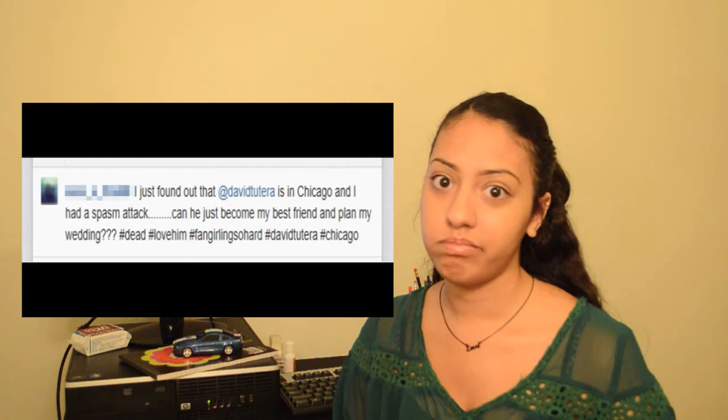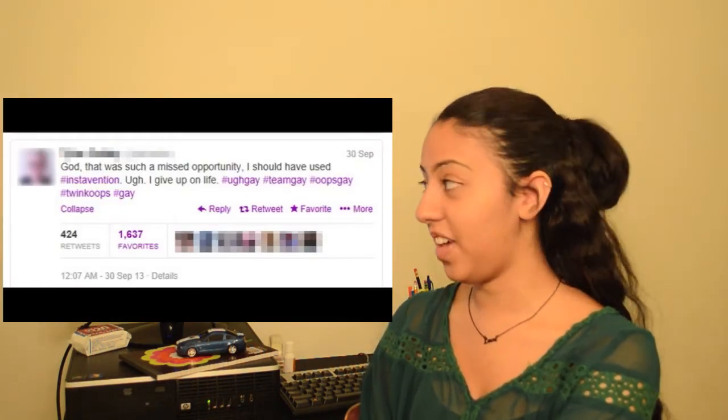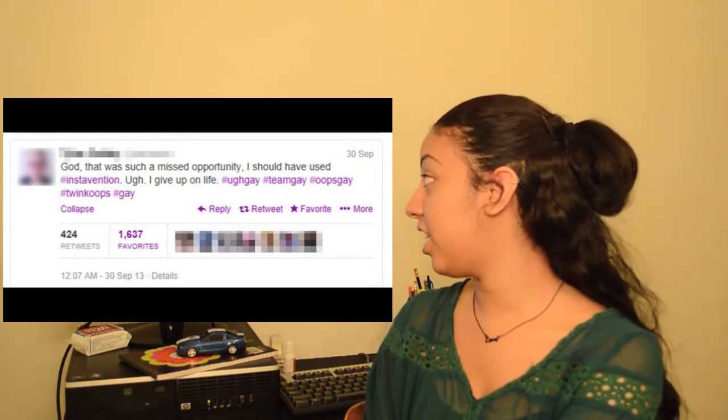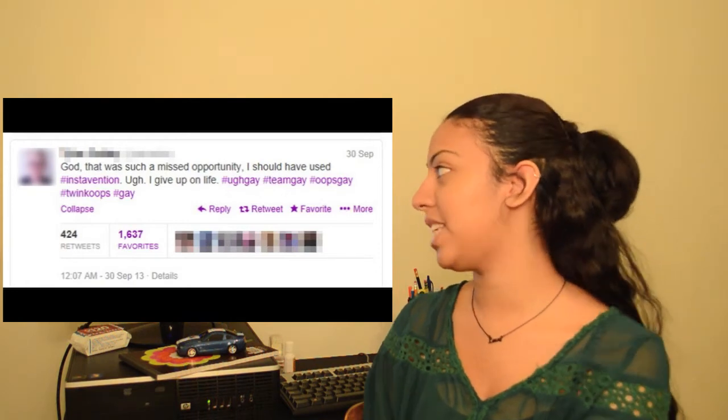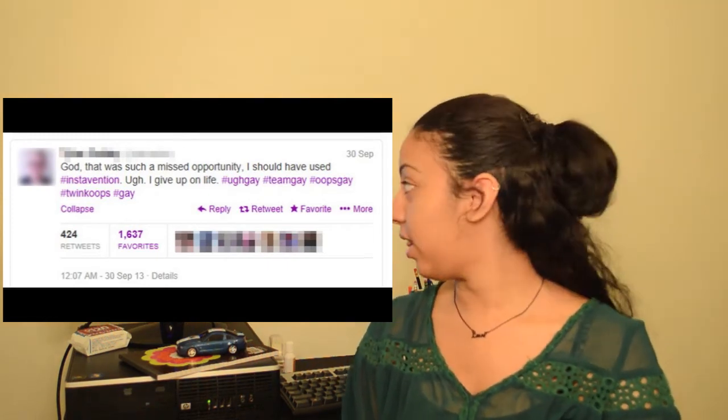Now this one we're going back to Twitter and it is from someone who a lot of people know and he's quite popular on this website that the video is on. So let's just look at a hint. And this person said 'god that was such a missed opportunity I should have used hashtag instavention. I give up on life hashtag ugh gay hashtag team gay hashtag oops gay hashtag twink oops hashtag gay.' You basically just put like how many - one two three four five hashtags to say that you're gay. I think we get it.